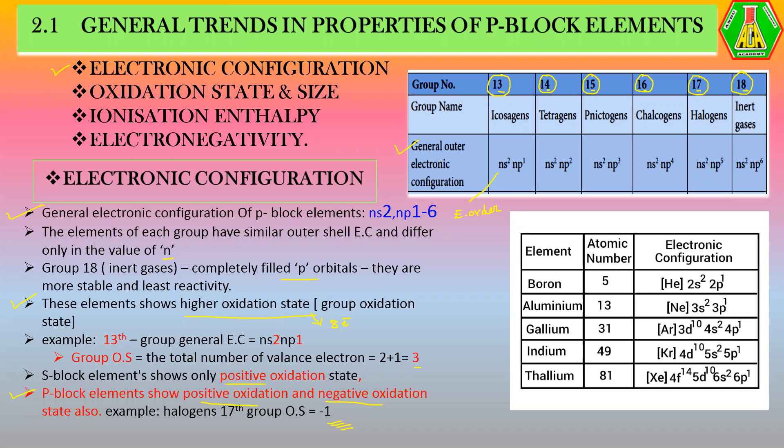For S-block elements, we will talk about the oxidation number. S-block elements are the alkali metals and alkaline earth metals — those two groups are purely metals. So we will talk about positive oxidation state only. But for P-block elements, both positive as well as negative oxidation numbers are possible.